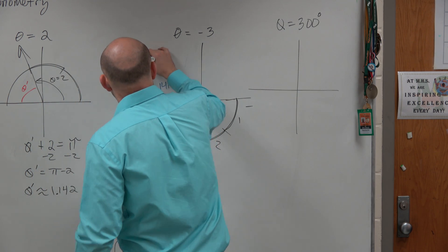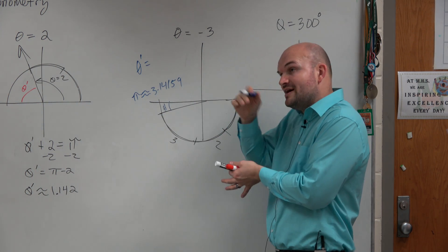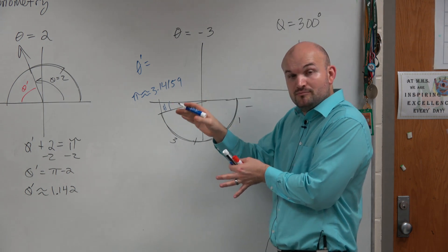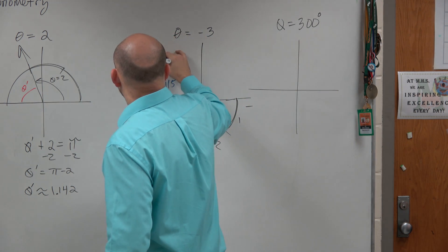0.14, so we could say theta prime. Because remember, even though we have a negative angle, reference angles are always acute and positive. So this would be 0.141.